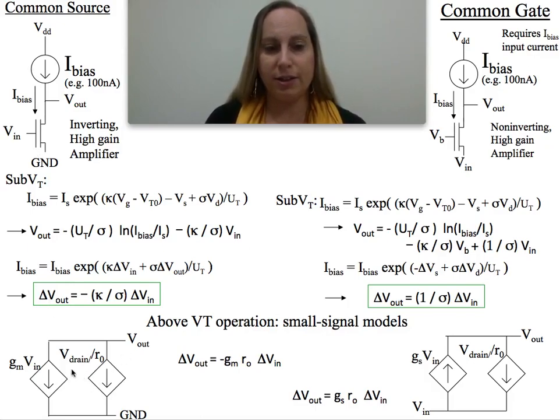In this case, that means we have two terms. Gm times Vin, which is its gate term, and V drain, which is its output voltage over the output resistance. So as a result, I get delta V out as minus GM R0 times delta Vin. I remember GM R0 in subthreshold would just be kappa over sigma. And so everything is consistent. But when you're above threshold, the math gets messier, so you may or may not want to always do it that way, but there are other ways to approach those questions.